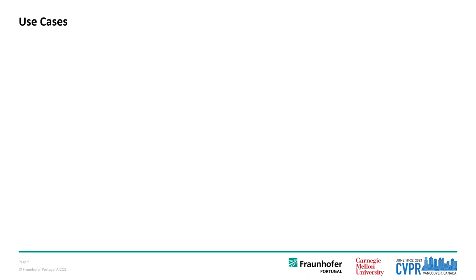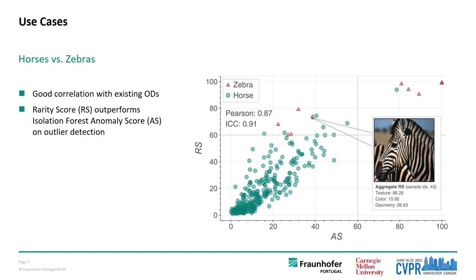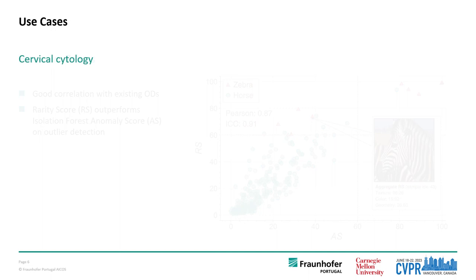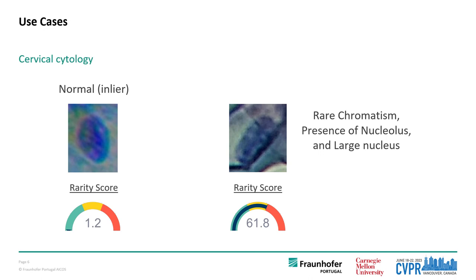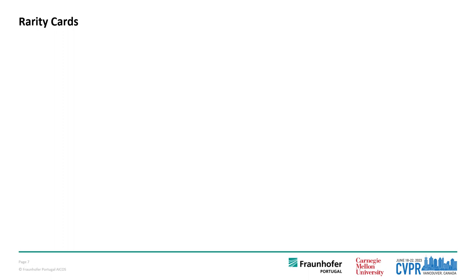ZEBRA was put to the test in two distinct scenarios. First, on a dataset of horses and zebras, where it successfully highlighted zebras as anomalies based on their texture and color features, showing good correlation with existing outlier detection methods. Second, on squamous cell nuclei of cervical cytology images, ZEBRA successfully differentiated between normal samples and rare cases by mapping low-level visual features to relevant clinical criteria such as large nucleus or hyperchromatism.